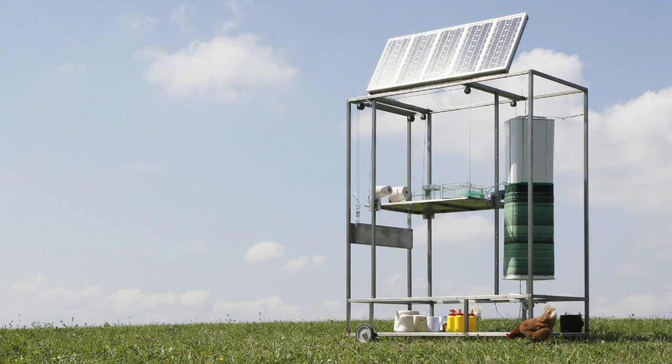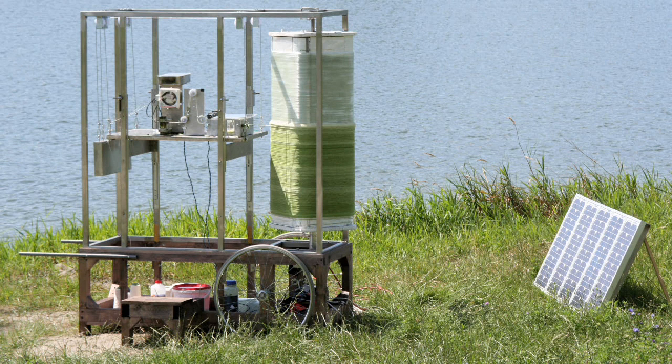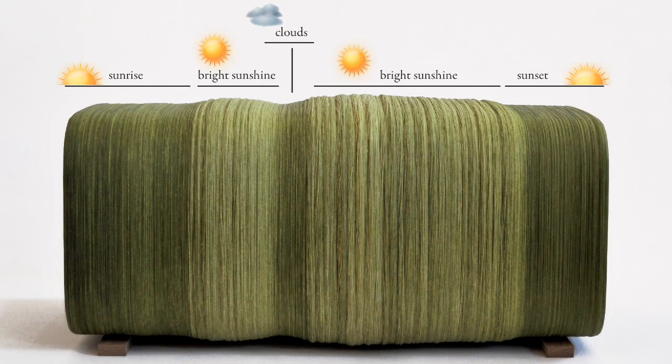The project is called 'The Idea of a Tree' and it's actually an autonomous solar-powered production process which produces one object per day from sunrise to sunset. By doing so, it incorporates the various sun conditions of the day into the object, so each object becomes a three-dimensional representation of the day and place of production.